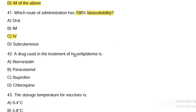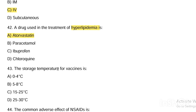Next question. Drug used in the treatment of hyperlipidemia is: Option A, atorvastatin. Option B, paracetamol. Option C, ibuprofen. Option D, chloroquine. Answer is Option A — atorvastatin is used in the treatment of hyperlipidemia.